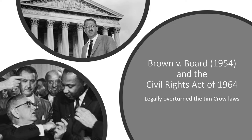That, along with 19th century Supreme Court decisions, paved the way for the Jim Crow era. We will focus on two of those decisions: the Civil Rights Cases of 1883 and Plessy versus Ferguson in 1896. Both decisions have been overturned and are now generally considered to have been wrongly decided.